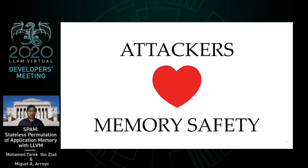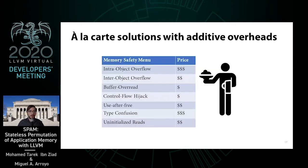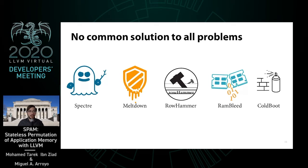What makes the issue of memory safety so prominent is that attackers love memory safety vulnerabilities. Data about CVEs exploited in Microsoft products show that the overwhelming majority are memory safety related. A number of à la carte solutions have been proposed over the years, solving subsets of the memory safety problem. Unfortunately, trying to cover all problems comes with additive costs, and the need to account for hardware side channels such as speculative execution has made memory safety even more elusive.